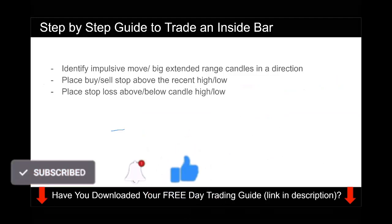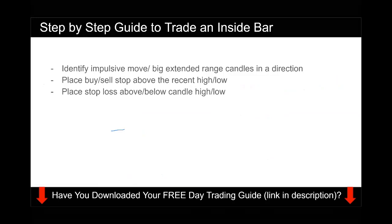Now let me show you step by step how to trade an inside bar. The first thing you want to do is identify an impulsive move or a big extended range candle in a single direction — bullish candles if you want to buy, bearish candles if you want to sell. Next, you need to identify an inside bar. Once you spot it, place a buy or sell stop order above or below the high or low of the inside bar. Lastly, place your stop loss at the opposite end of the inside bar to manage your risk.